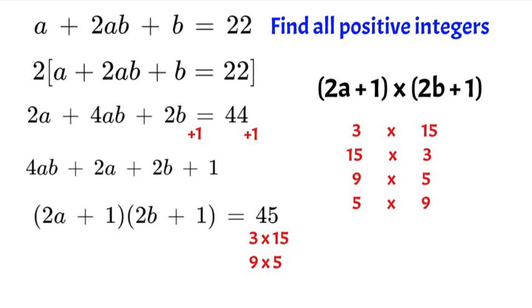So if we solve for each of these we'll start with the first one, 3 by 15. We'll have 1 and 7, so our a value is 1 and our b value is 7. Do the next one and it will be flipped. Our a value will be 7 and b will be 1. Now for the 9 times 5, a will be 4 and b will be 2, and then that will be flipped for the last one. We'll have 2 and 4.